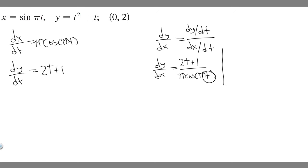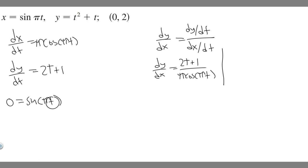But what t value do we need to plug in? We're given the point (0, 2). The 0 is the x value and 2 is the y value. So I take x = 0 and plug it into the x equation: 0 = sin(πt). What value makes this 0? My first instinct is t = 0, but it could be others — for example, sin(2π) is also 0. Let's go with t = 0 first and then verify.